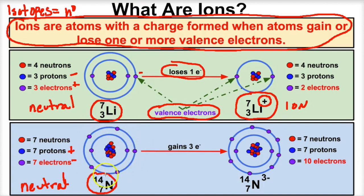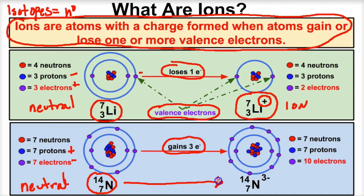When nitrogen reacts with metals on the periodic table, it has a tendency to gain three electrons from whatever metal it's reacting with. If this atom gains three electrons — and remember, electrons are negative — this stable atom is going to become a three-minus ion. It becomes a negatively charged atom; in this case the nitrogen atom becomes a nitrogen ion, which we call nitride.